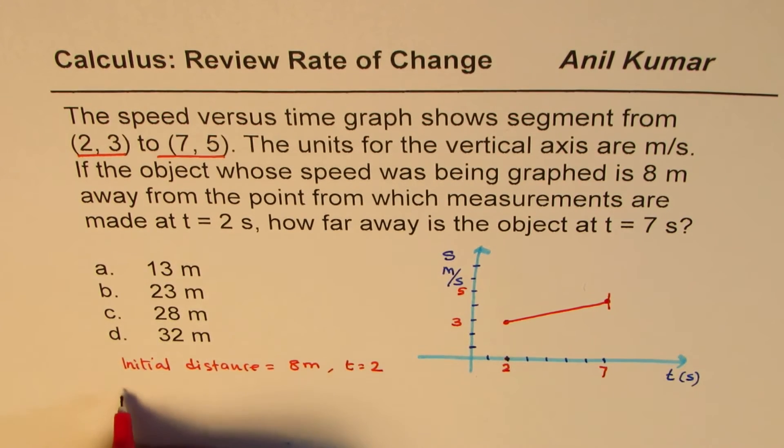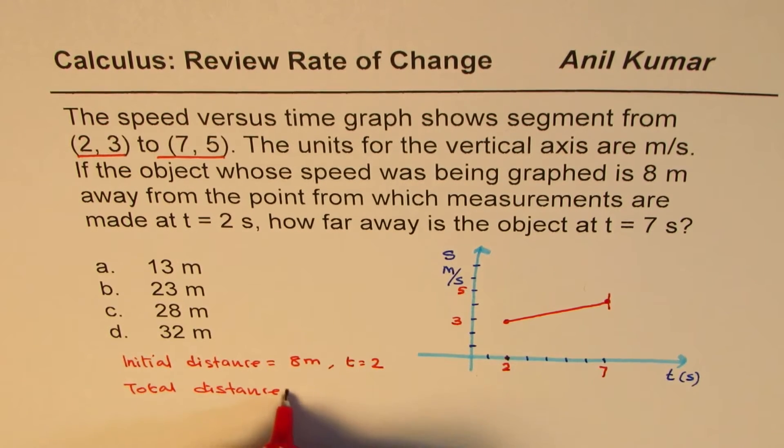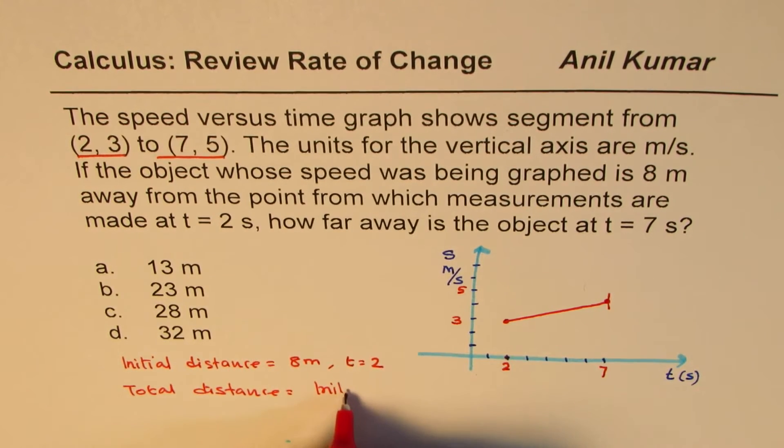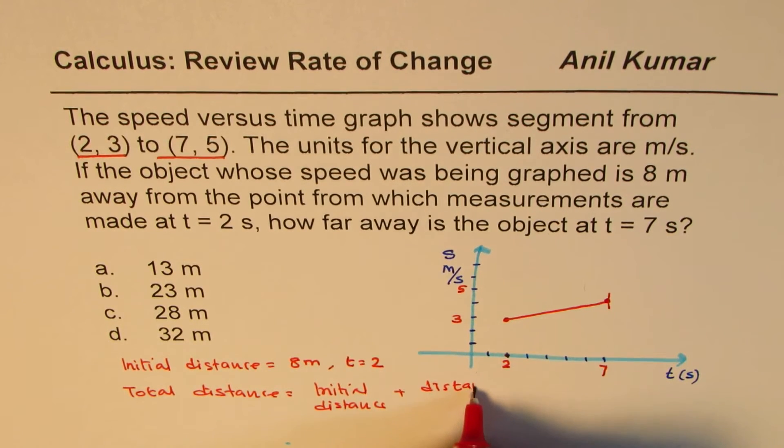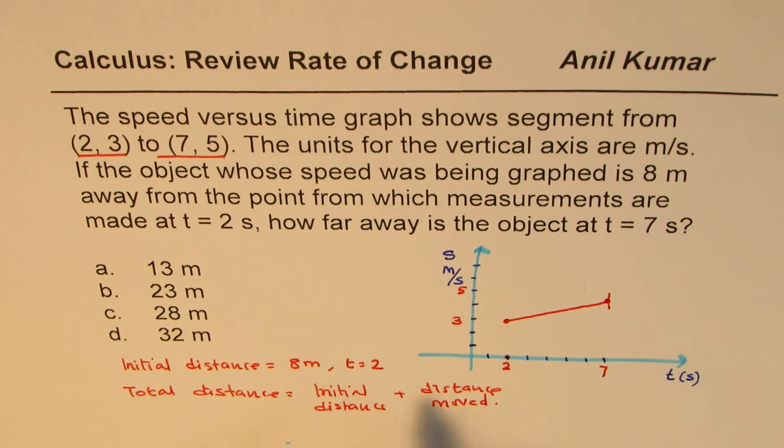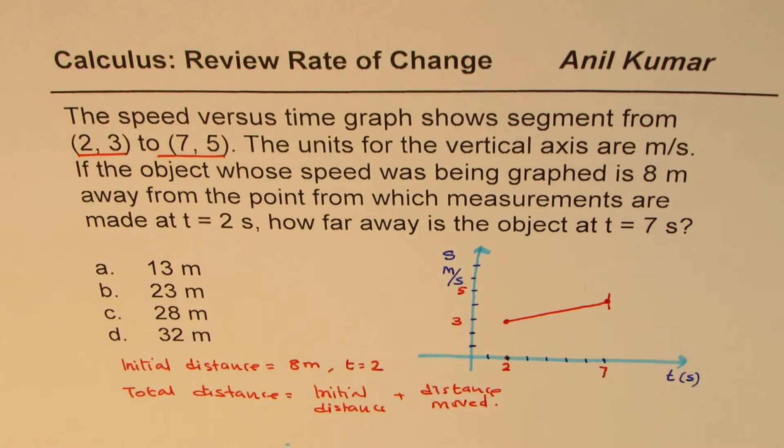So the total distance equals initial distance plus the distance traveled or distance moved. Now we know the initial distance is 8. How much did the object move during this time from 2 to 7 seconds? This is what we need to figure out. If you are given speed and distance graph, then the distance can be measured by finding area under the curve.